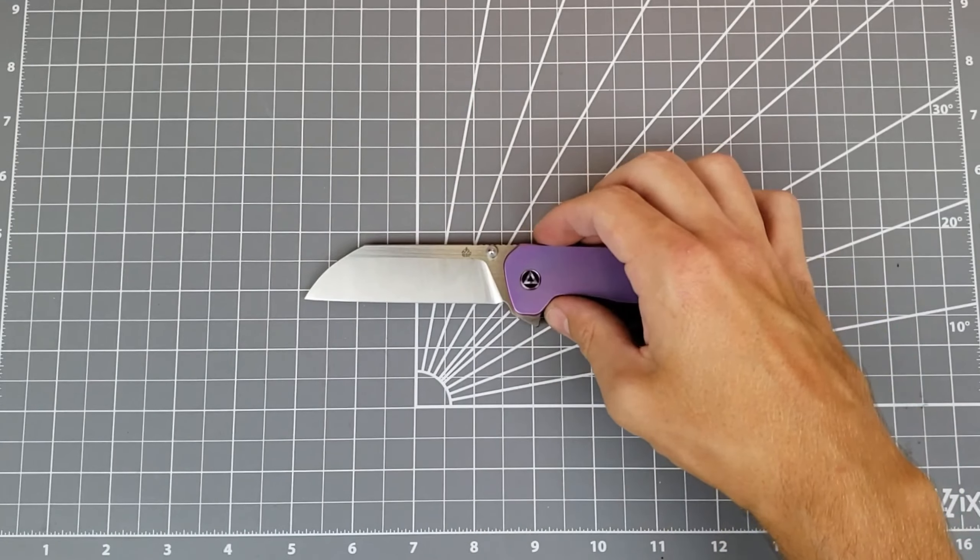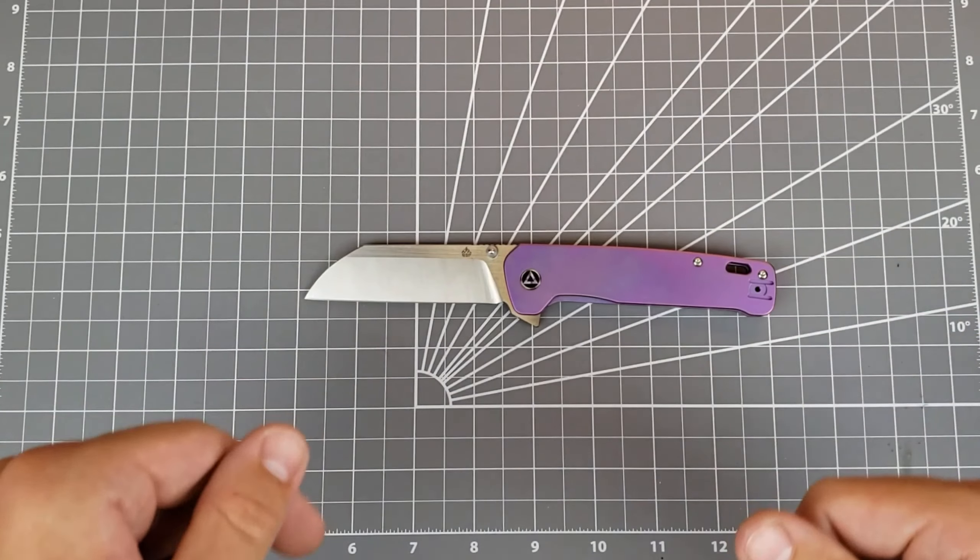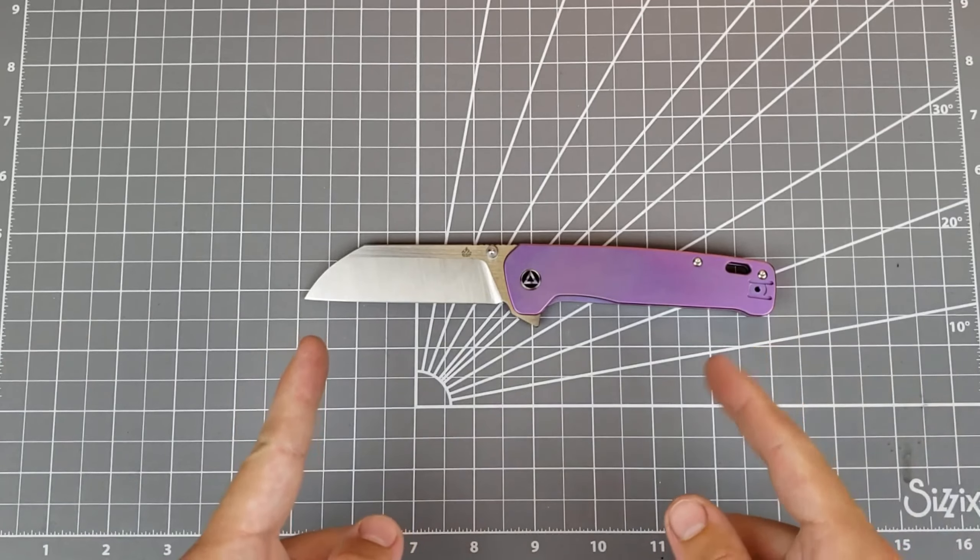So that's all I have for this QSP Penguin XL version. Hope you found the video interesting. If you have any thoughts about QSP, the penguin or this XL version specifically, go drop a comment down below. I would love to hear your thoughts about it. While you're down there, don't forget to hit that like button, subscribe button. If you like sharpening, knife content, all that sort of stuff would definitely help me out. And with all that said, I hope you enjoyed the video and I will catch you on the next one.